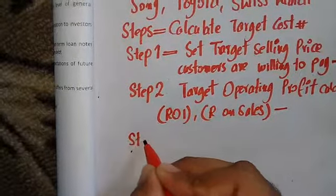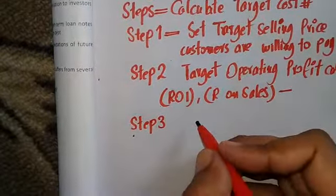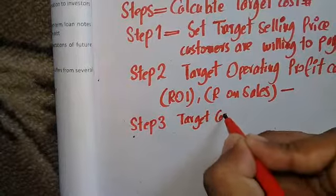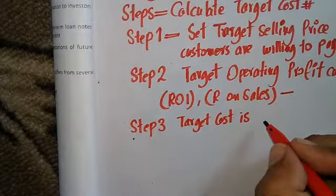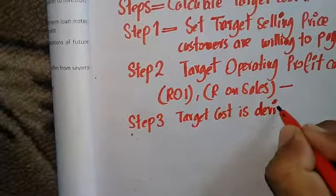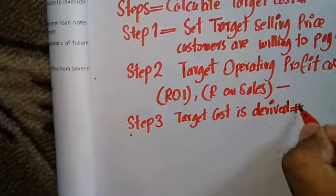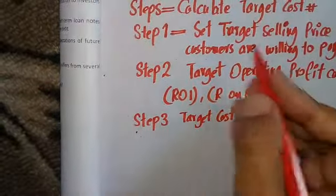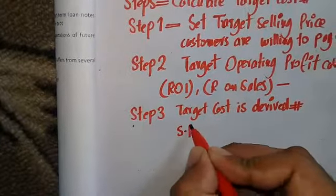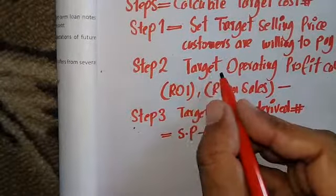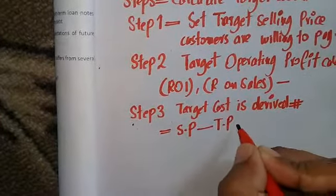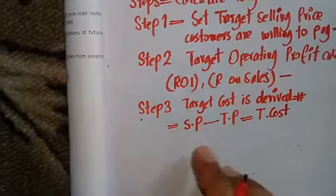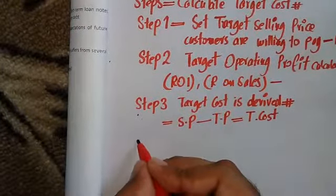Step three: the target cost is derived. Target cost is derived from: step one (selling price) minus step two (target profit) equals target cost. So we have these three points forming the core calculation.